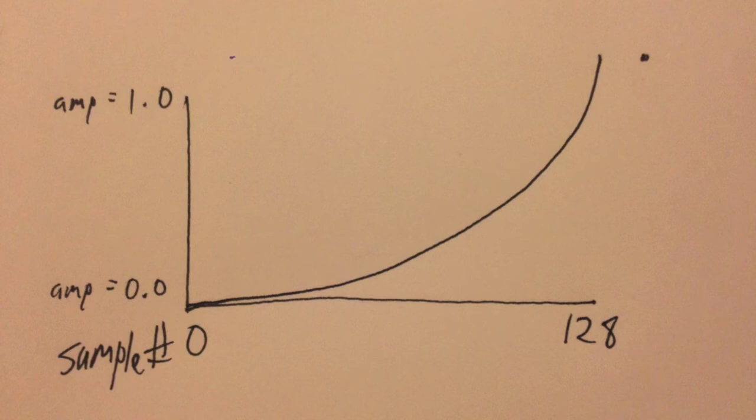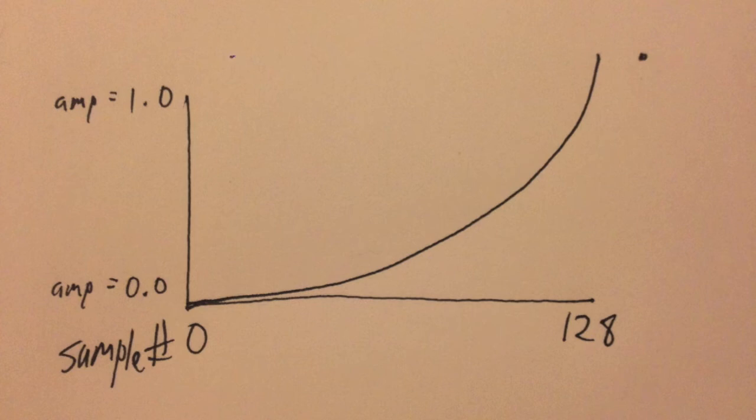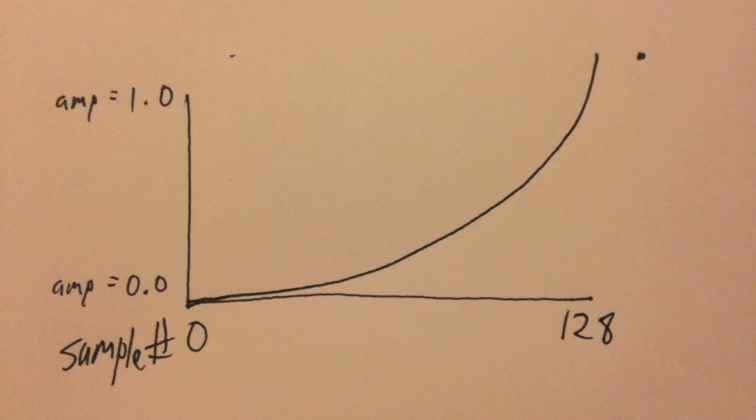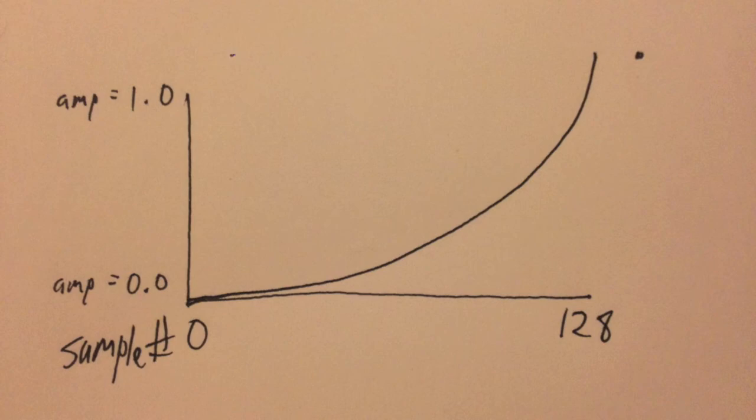And so what you do is you take your linear value, let's say you have a linear envelope, and then you take that and look this up on this table, and you get a value between zero and one, but that would be curved in a way that would give you that exponential decay.